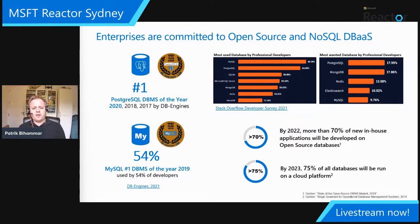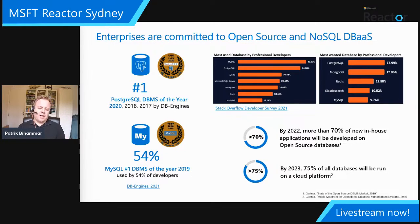Looking at the developer perspective, according to the Stack Overflow Survey, MySQL is number one, leading with web developers who started building websites on the LAMP stack. More enterprise developers building internal applications tend to favor Postgres as a real alternative to DB2, Oracle, or even SQL Server. MongoDB has become a de facto standard for NoSQL and is now in the top five most commonly used databases.